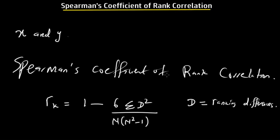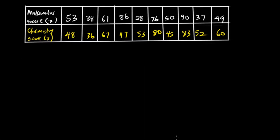Let's look at an example to illustrate the Spearman's Coefficient of Rank Correlation. In this example, we are given the scores of students in an undergraduate test for two subjects, mathematics and chemistry. We have 10 undergraduate students and their scores for both subjects, and we have to determine the Spearman's Coefficient of Rank Correlation. The first thing we need to do is arrange the scores in both subjects separately in descending order of magnitude so we can easily rank them.